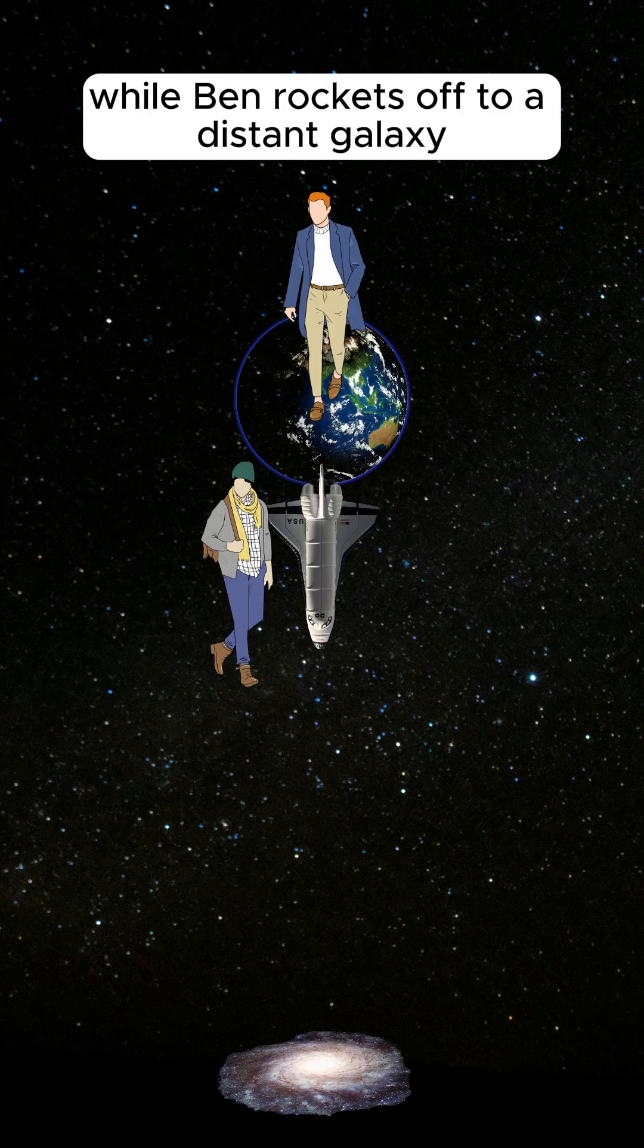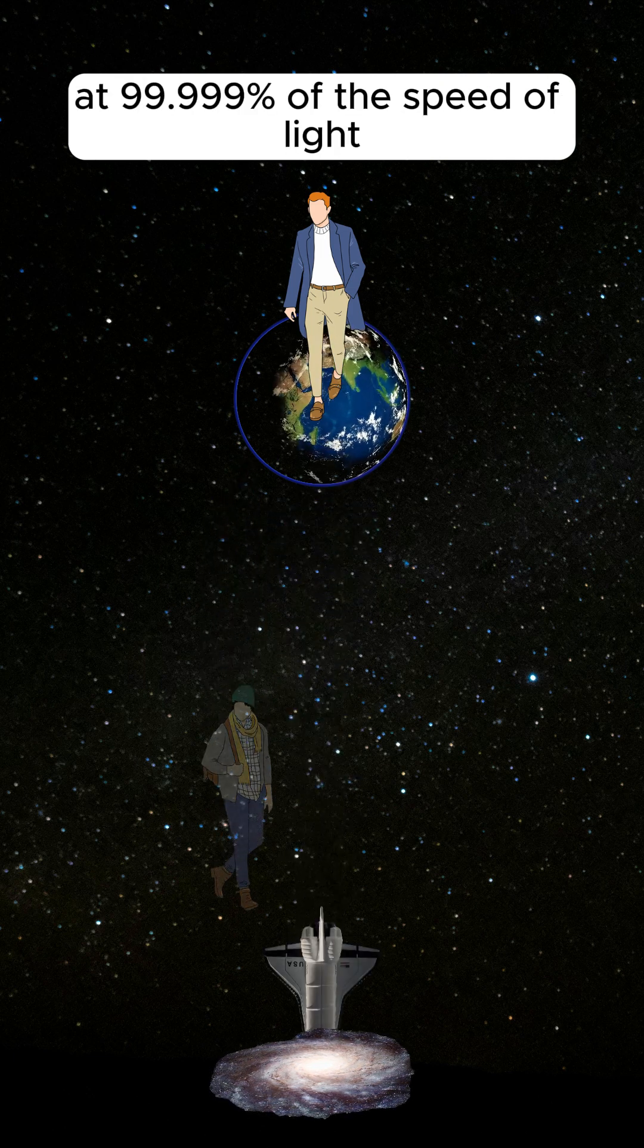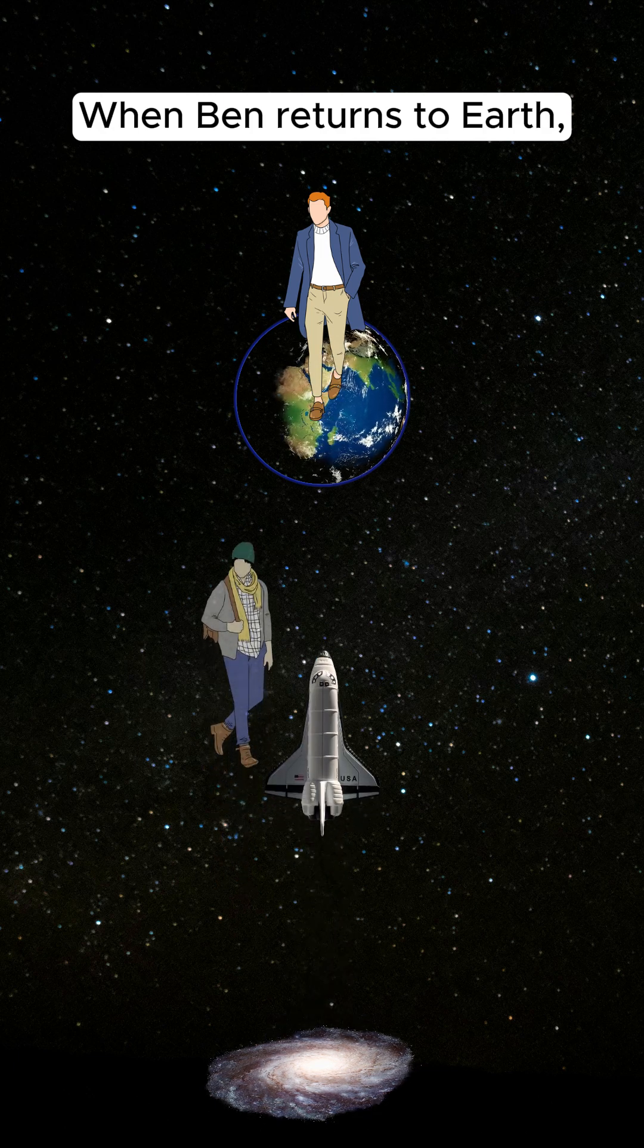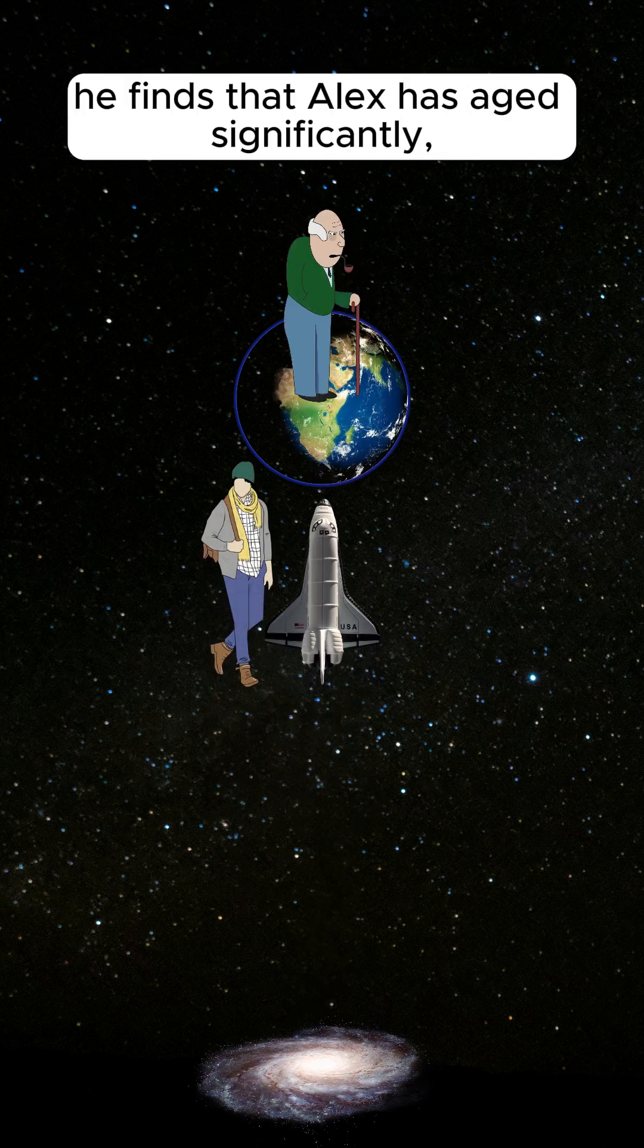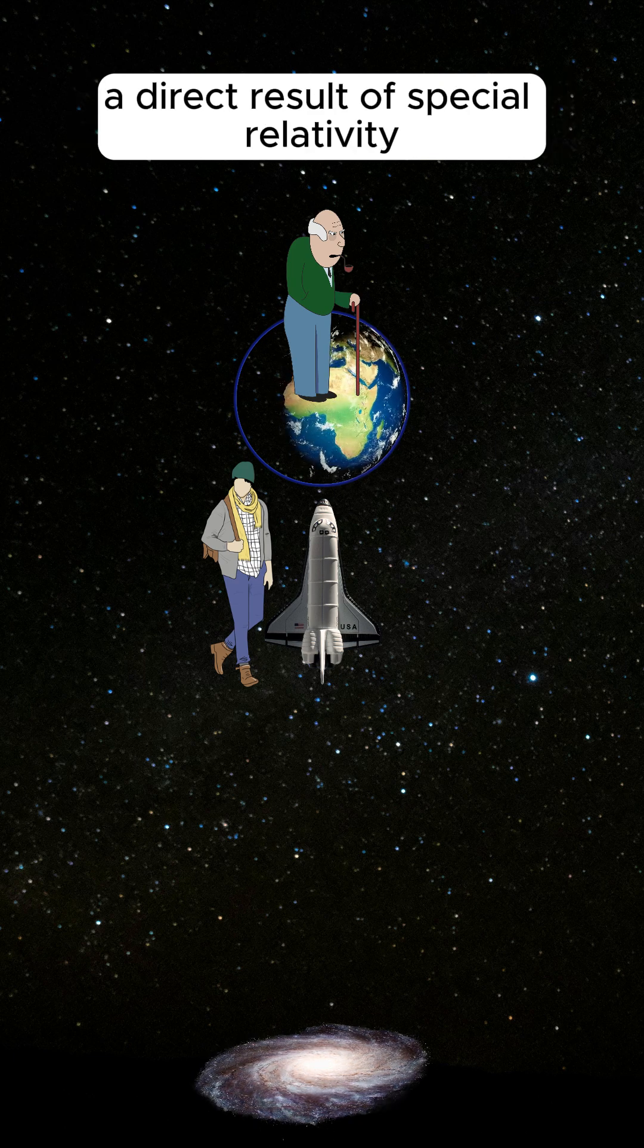Alex stays on Earth, while Ben rockets off to a distant galaxy at 99.999% of the speed of light. When Ben returns to Earth, he finds that Alex has aged significantly, while he himself has barely aged, a direct result of special relativity.